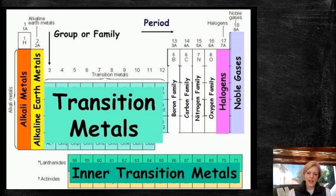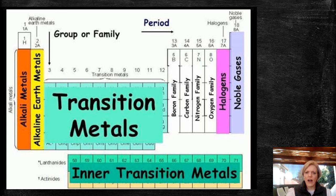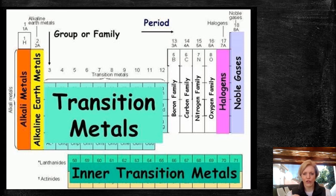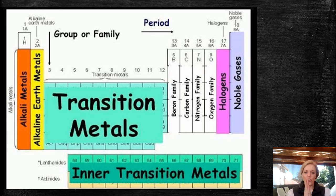That said, your periodic table labels it one to 18, but we teach one to eight — which is going to be one, two, three, four, five, six, seven, eight all the way up to noble gases. We are going to leave out the transition metals for now with the groups and concentrate mainly on those eight groups. But like I said, some periodic tables might label from one to 18.